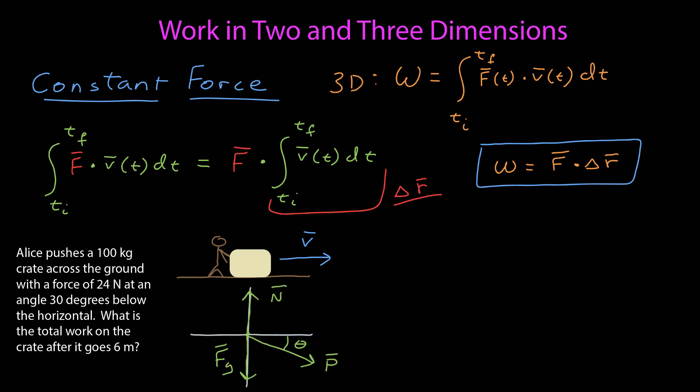If I draw a free body diagram, I have a normal force of the ground on the crate, the force due to gravity of the earth on the crate, and this pushing force, which is 30 degrees below the horizontal. Since I know it's going along the ground, my displacement vector will also be parallel to the horizontal surface. That tells me that the dot product between the normal force and the displacement vector is 0. The dot product between the force of gravity and the displacement vector is equal to 0.